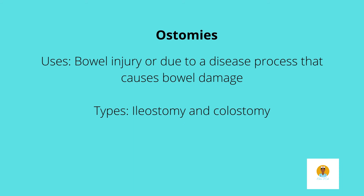Ostomies are another GI procedure performed when a patient's bowel is injured or diseased and part of it needs to be removed. There are two types: an ileostomy, which is an opening in the ileum — part of the small intestines — and a colostomy, which is an opening in the colon, the large intestine. With an ileostomy, the output is more liquid since the stool has not yet been formed, whereas colostomy output is more formed and bulky.